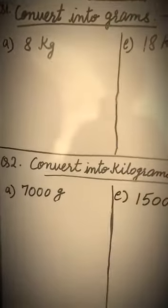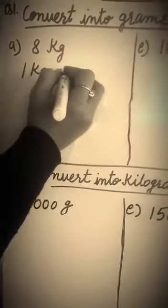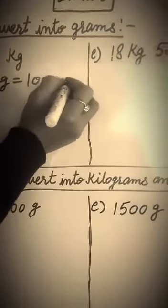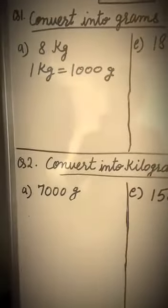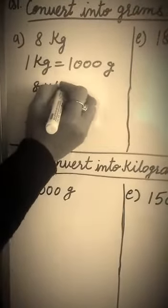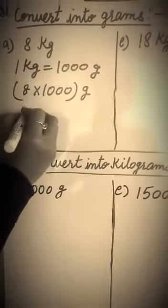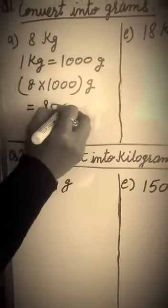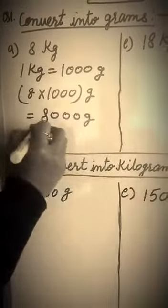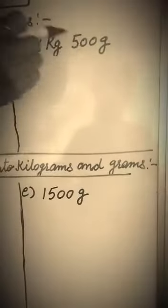How to convert kilogram? We know 1 kilogram equals 1000 grams. So simply we will multiply: 8 multiply 1000 grams. So our answer is 8000 grams. Now next, 18 kilogram 500 grams.